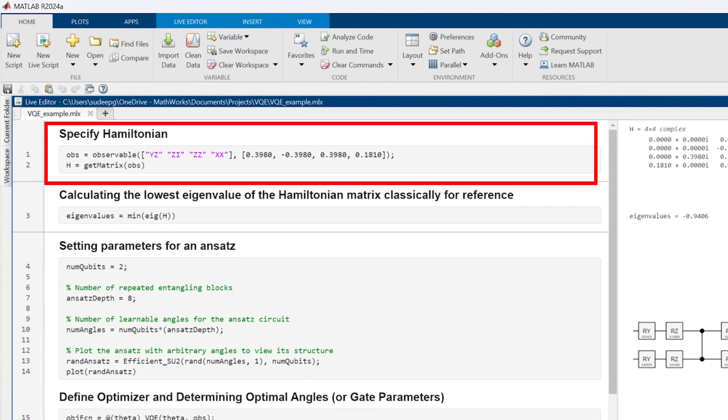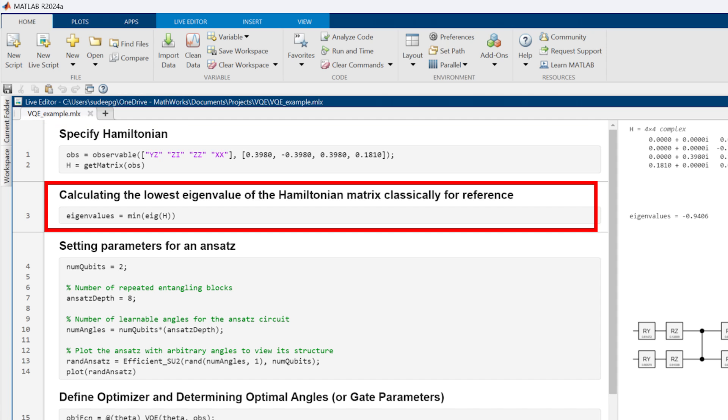First, we define the Hamiltonian. Since it's a simple Hamiltonian, let's solve it classically for the lowest eigenvalue using some standard MATLAB operations.